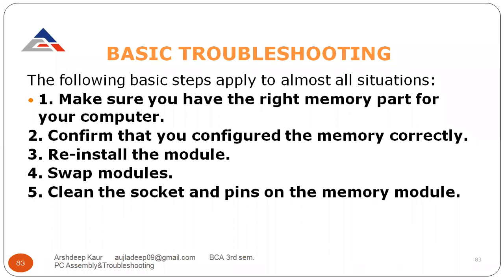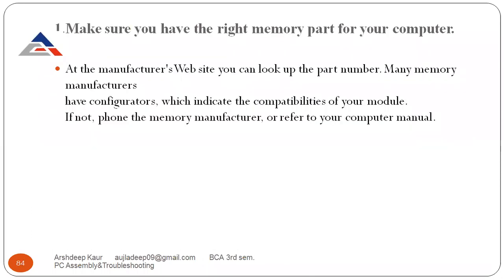Basic troubleshooting steps are: first, make sure you have the right memory part for your computer system; second, configure your memory correctly; third, if any memory module is defective, reinstall it; fourth, swap the modules — interchange them if one module is not working in one place; and fifth, clean the socket and pins on the memory.